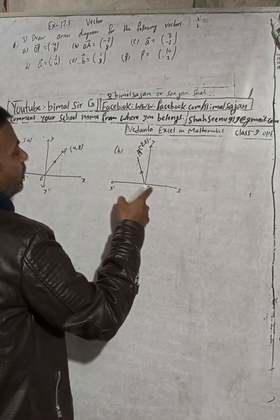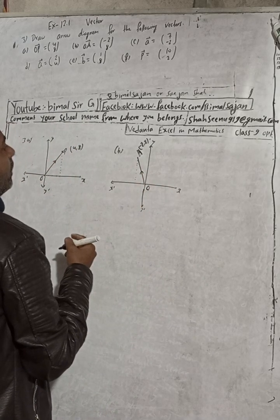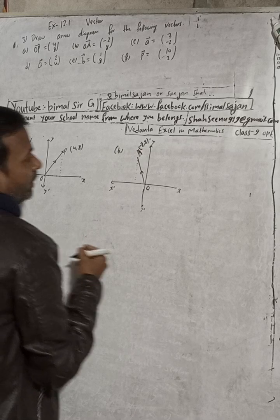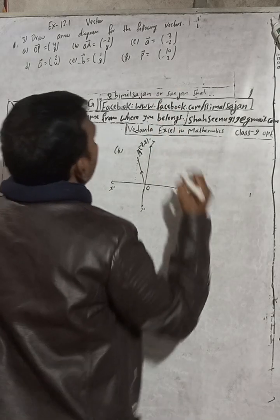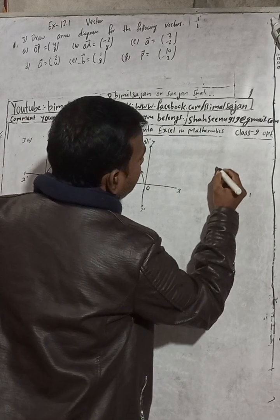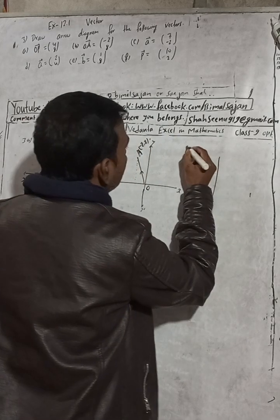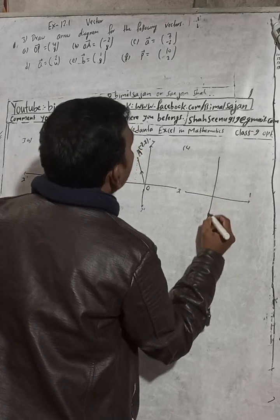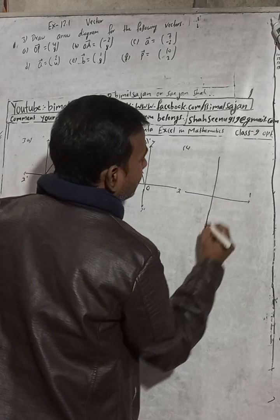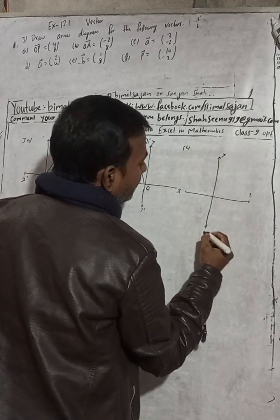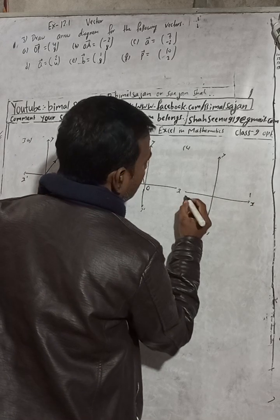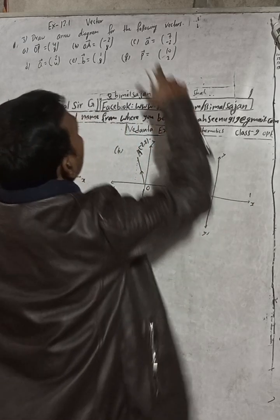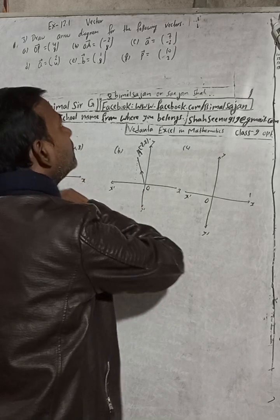Join this point — this is our A point, so vector OA is from origin to A. This is the OA vector. Now for part (c), there is the x and y axes and the origin. For small 'a' vector, this is just the OA vector line.